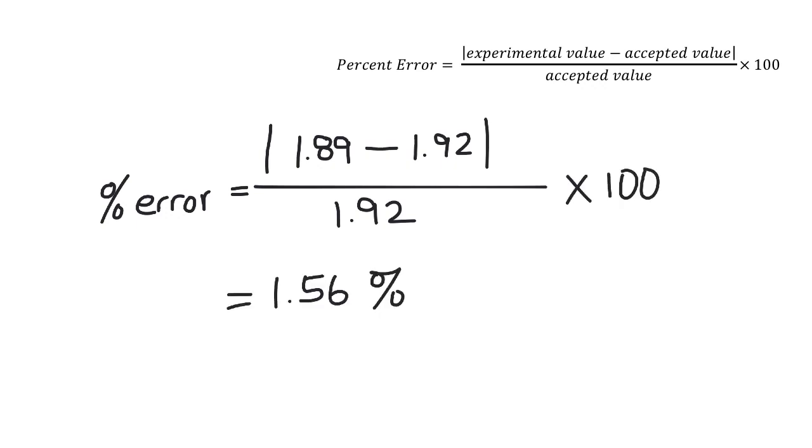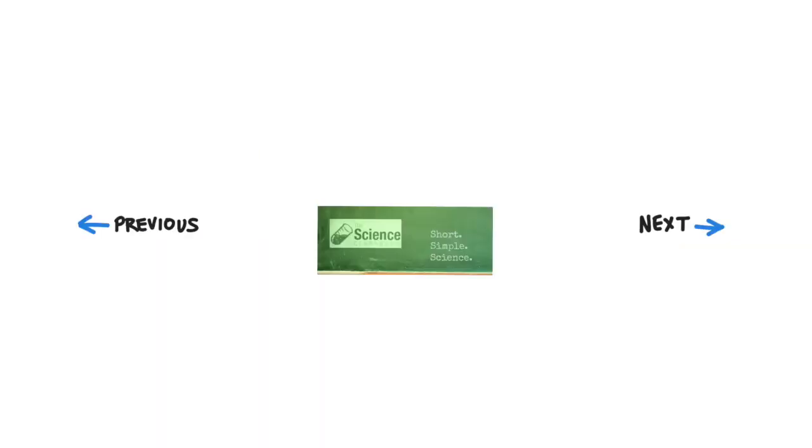And so, in this experiment, we get an error of 1.56%. That's pretty good. And getting that close to the reported value, I think we can conclude that the package is telling the truth. But thanks for watching.